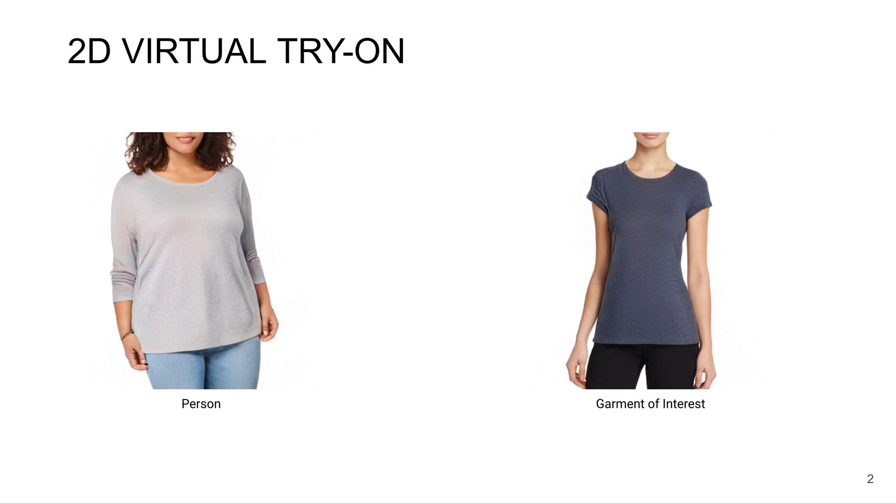In the 2D virtual try-on task, we have an image of a person and an image containing a garment of interest, such as a shirt, and we want to synthesize the person in the new garment. You can see we have the person on the left, and she's going to try on the blue shirt from the right image.